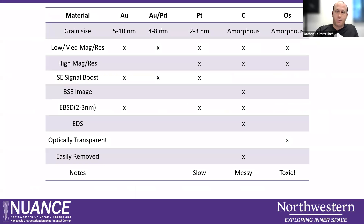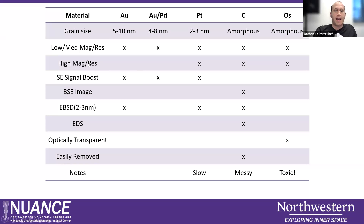Let me talk about the different materials and their pros and cons. In terms of grain size, gold gives the biggest grains, then gold-palladium, platinum, and carbon and osmium are amorphous, giving you the smallest grain size. Gold, palladium, and platinum are all suitable for low or medium magnification and resolution. If you have really high magnification or resolution needs, you're going to need to use either platinum, carbon, or osmium. Our rule of thumb is that if your feature size is smaller than 100 nanometers, you want to use the osmium coater. On the other hand, you can get a boost of secondary electron signals by using some of the metals — so if that's important to you, you'll want to use gold, gold-palladium, or platinum.